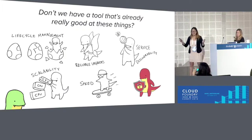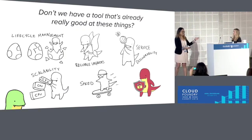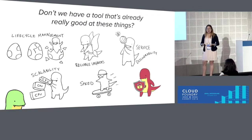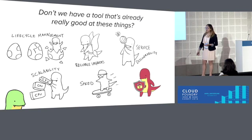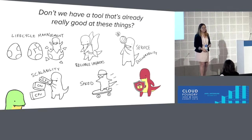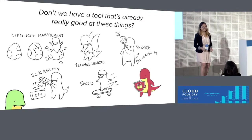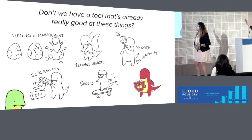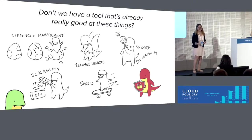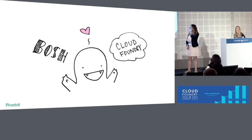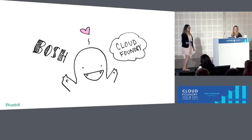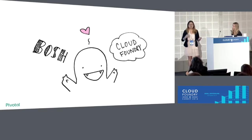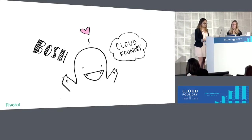You probably all know what's coming because the title of this talk has the word in it. Given that we want all of these day two operational requirements to be met, it turns out we already have a tool that's pretty good at most of these things — it's Bosh. The on-demand service broker is a project that Pivotal has been investing in for the last two years that leverages all the orchestration power of Bosh in order to provide on-demand service instances for Cloud Foundry.